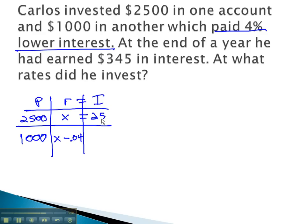When we multiply principal times rate, we get the interest in the first account is 2,500x. And when we distribute in the second account, we get 1,000x minus 40. We also know the total interest in this account is 345, when we add the two interests together.